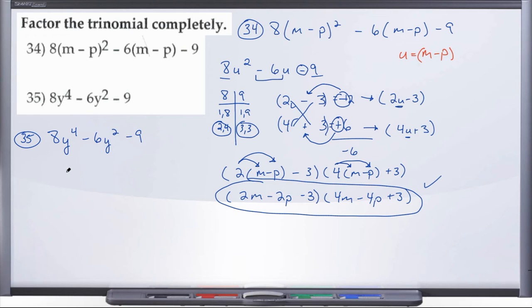So we know that we're going to be using one of the other methods to factor. Because we have 1, 2, 3 terms. So 3 terms tells us either scissors or AC method, trial and error method. So let's go ahead and we're looking for factors of 8 and factors of 9.